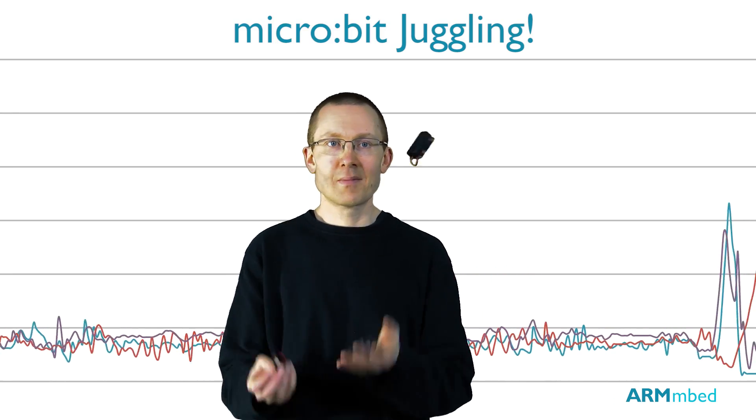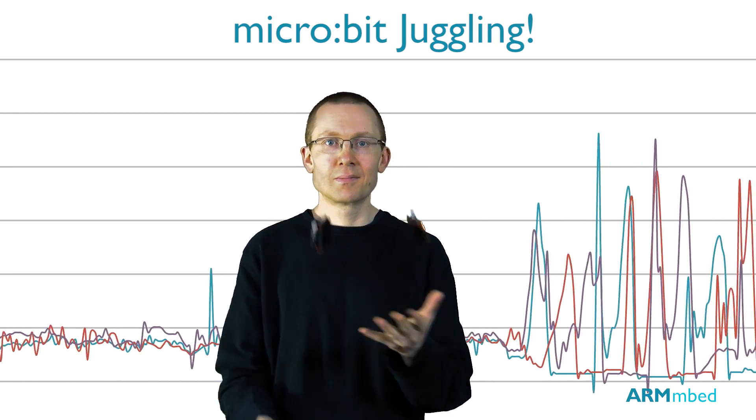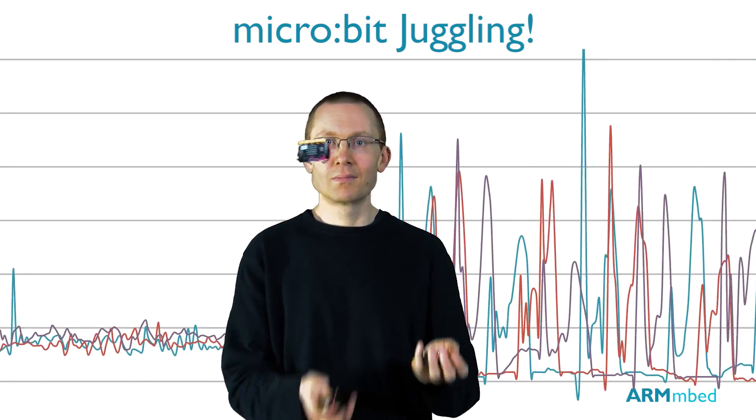Simon has two other microbits that are running the same programme and if he starts juggling now, you'll be able to see every time he throws a microbit in the air there's a peak from the acceleration from his hand.